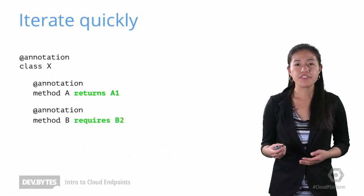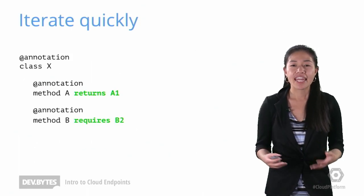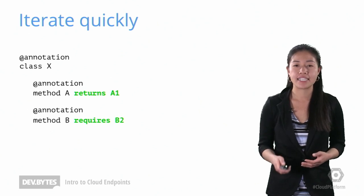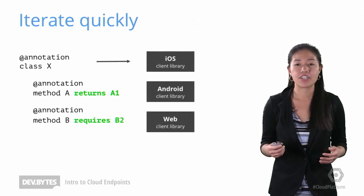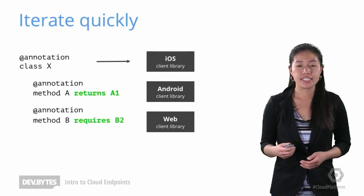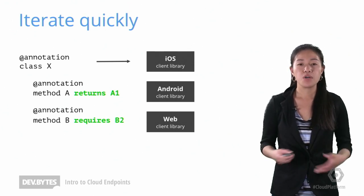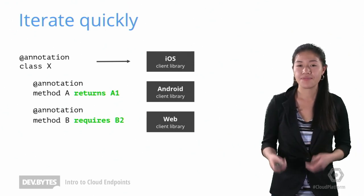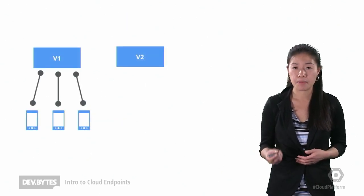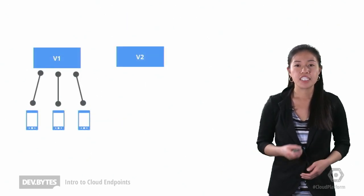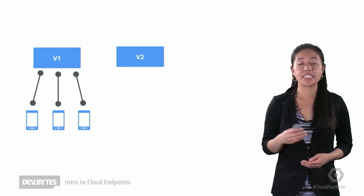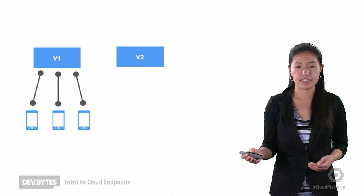Over time, your server API will naturally evolve. And that's where cloud endpoints can really help reduce those accidental errors, because it automatically generates the client libraries for you. When you're ready to release the clients with your latest build, we'll help you handle the upgrade smoothly. This is made possible by API versioning support in cloud endpoints — different API versions can actually co-exist, and you can do a gradual staged rollout of these new changes.